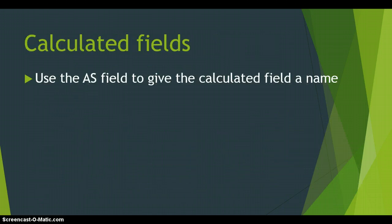The first thing we're going to use is a calculated field. This is when we want to do a calculation based on information in the database. It's important because if you can calculate information from existing data, there's no need to store it manually. For example, there's no point storing age in a table because it keeps changing, but if we store the date of birth we can always calculate the age.